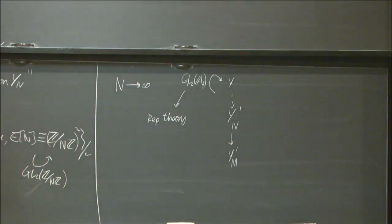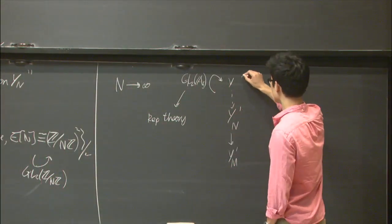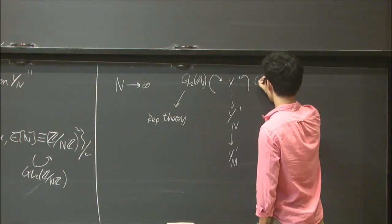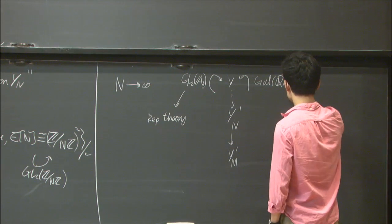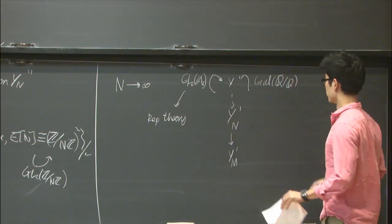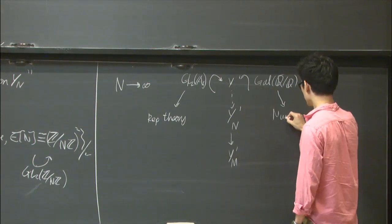I forgot to mention, this union is actually defined over Q, the rational numbers. By virtue of the fact that these yn primes are all defined over Q, you also have this Galois action of the absolute Galois group of Q. And this is an important object of study in number theory.